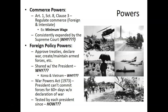Commerce powers are specifically laid out in clause three of section eight — enumerated power number three. Congress has the ability to regulate commerce. An example is minimum wage, because it relates to trade and how much people earn at a minimum level. Regulating commerce can be done domestically, interstate, or with foreign powers, so it covers both realms.